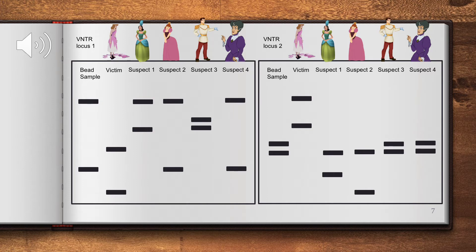Evil stepsister 2 matches the sample DNA at Locus 1 exactly, and therefore is a suspect we will want to investigate further. At Locus 2, one of her bands matches the sample, however, she is not an exact match and cannot be the culprit.